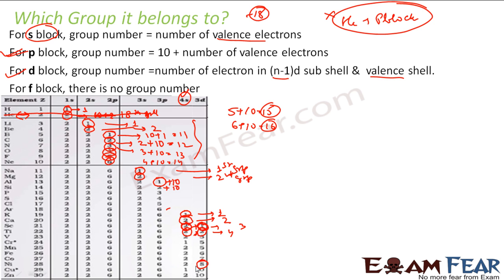Right. So nickel if you see, this is again a d block element. And the valence shell is 4s. So 4 minus 1 is 3d. So 3d and 4s you add. This becomes 10. So this is 10. Correct.